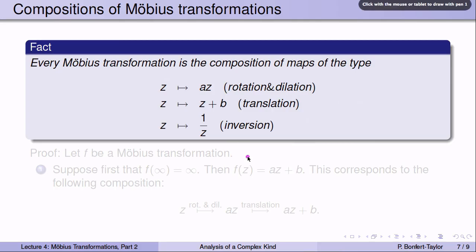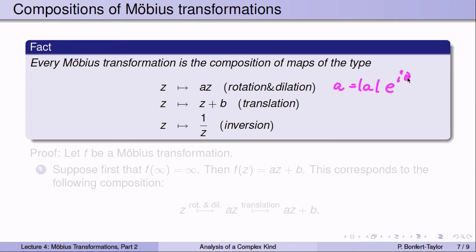It turns out there are basically only three types of Möbius transformations, and every Möbius transformation is the composition of maps of these types. The types are: z ↦ az (a combination of rotation and dilation — writing a = |a|e^{iθ} means rotating by θ and stretching by |a|); z ↦ z + b (a translation); and z ↦ 1/z (an inversion). Those three types make up every Möbius transformation.